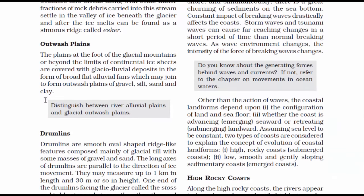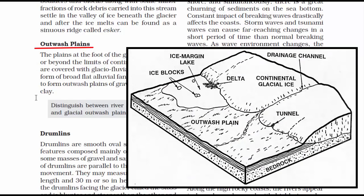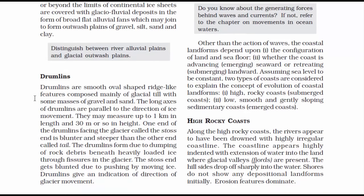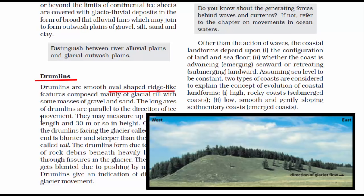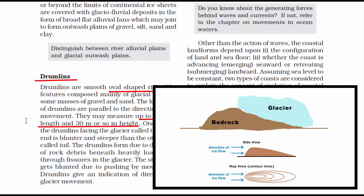The third type of depositional landform due to glaciers is outwash plains. These are plains formed of glacial sediments deposited by melting water, found at the foot of the glacial mountains and covered with glacial fluvial deposits. The fourth type is drumlins. Drumlins are smooth, oval-shaped, ridge-like features composed mainly of glacial till. They may measure up to 1 km in length and 30 m or so in height. From the side view, a drumlin looks like an elongated hill in the shape of an inverted spoon or half-buried egg, with a blunt end and a tail. Drumlins give an indication of the direction of glacier movement.